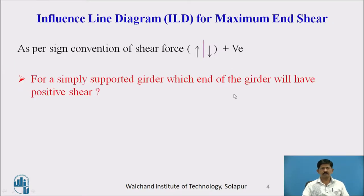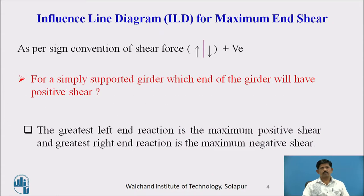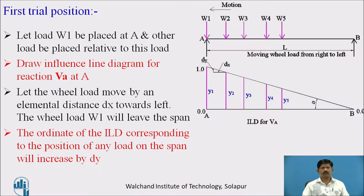Now, influence line diagram for maximum end shear — as per the sign convention of shear force, for a simply supported girder, the greatest left end reaction will be the maximum positive shear, whereas the greatest right end reaction will be the maximum negative shear. As the loads move from B to A, the first trial is W1 placed at A, and we draw the influence line diagram for VA, the reaction at A.